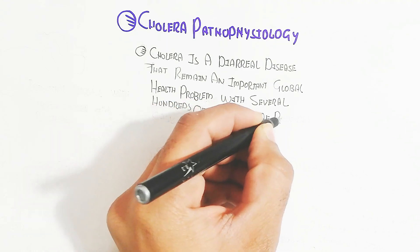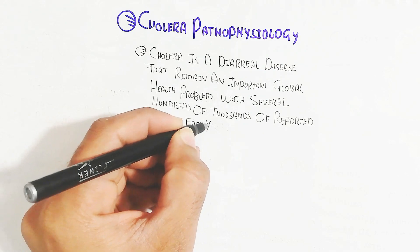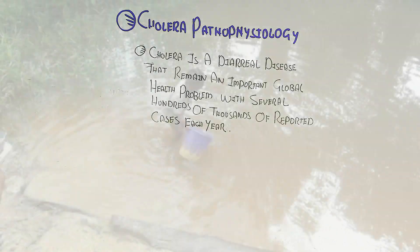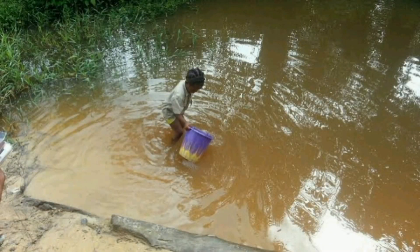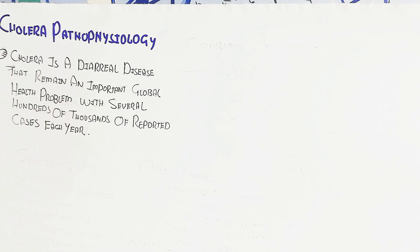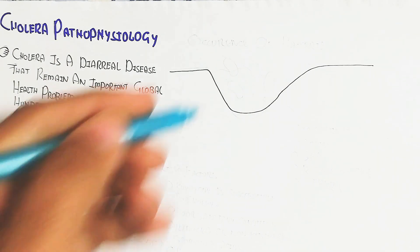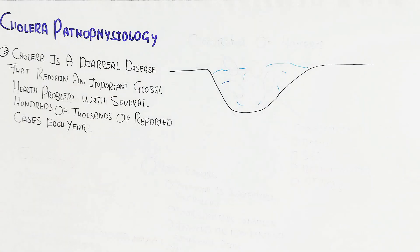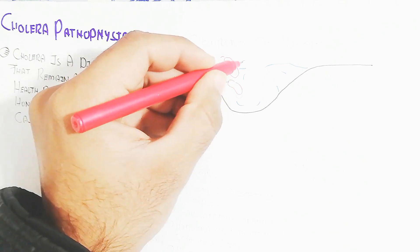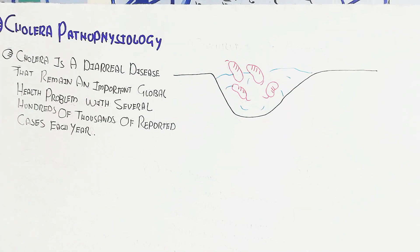Cholera bacteria can infect a person due to contamination through several processes. Here is a person who drank contaminated water containing cholera bacteria. Let's begin to understand - this is water, and inside the water is contaminated water with cholera. This contaminated water can be present...